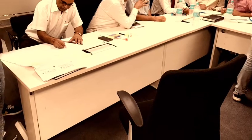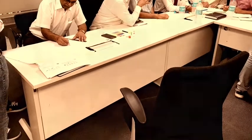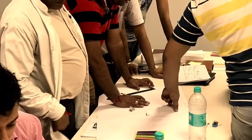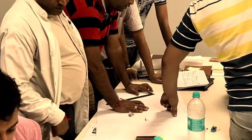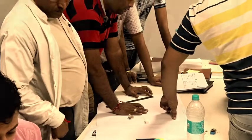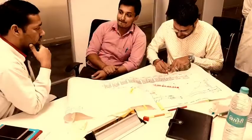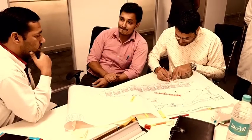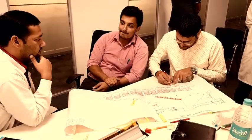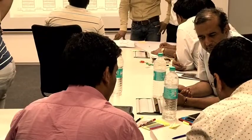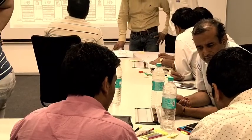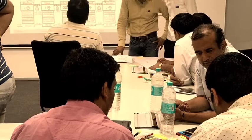The future state map can be drawn with the help of takt time and by creating continuous flow wherever possible. You use supermarket, pull system, and customer schedule to implement the value stream mapping.